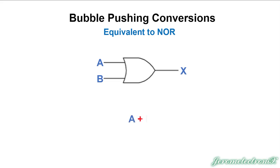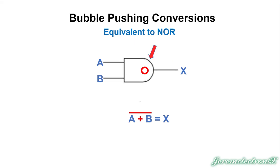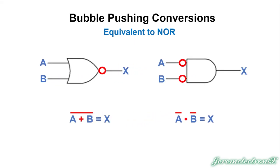We can do the same thing with an OR gate. There's the equation: A plus B equals X. We're going to change it into a NOR gate by adding a NOT gate. Now we push that NOT gate through — it changes the gate to its opposite, so OR becomes AND, and the bubble splits to each input. This changes both the gate and the equation sign. Change the line, change the sign. The schematic symbols on the left and right are equivalent; the equations are equivalent — they do the same work.